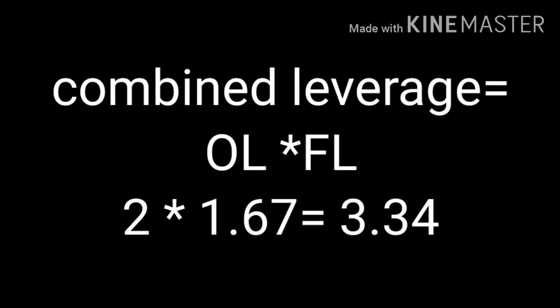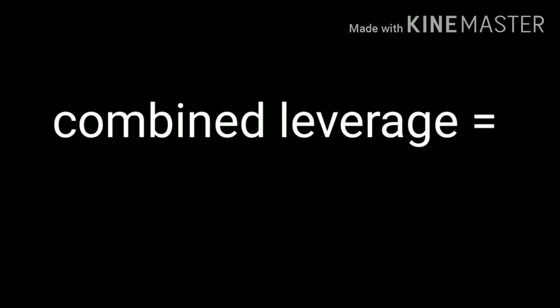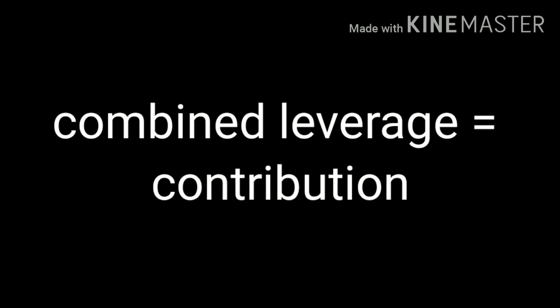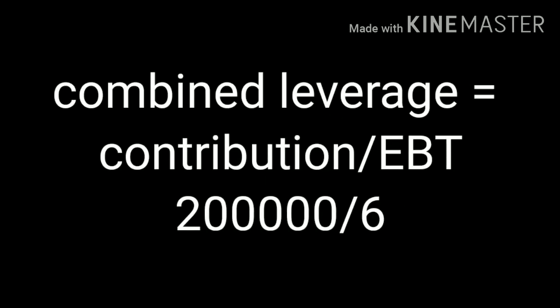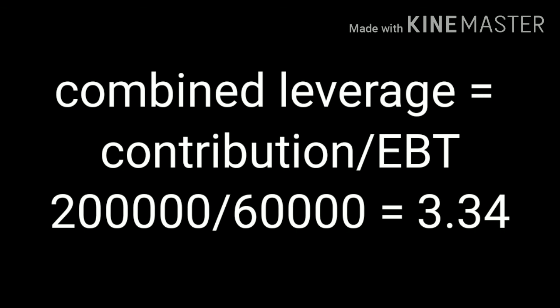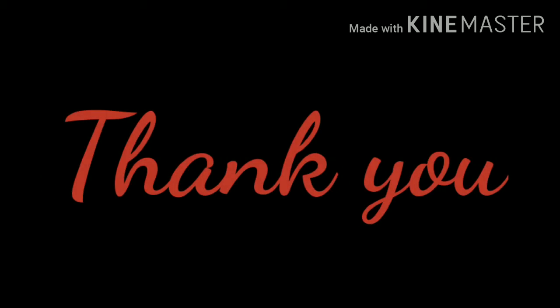One more formula for calculating composite leverage: contribution divided by EBT. Here contribution is 2 lakh and EBT is 60,000, so 2 lakh divided by 60,000 equals 3.34. This confirms the combined leverage is 3.34.